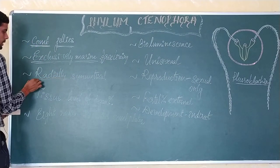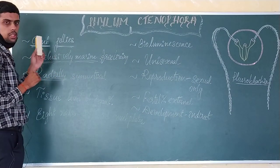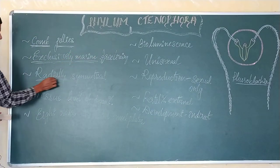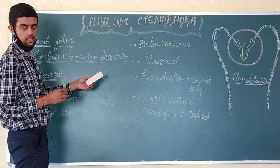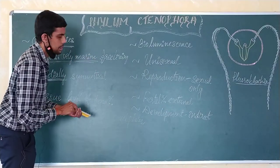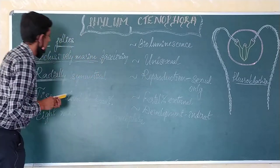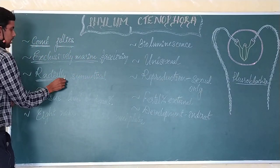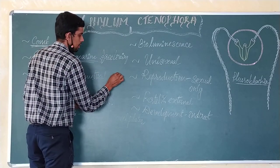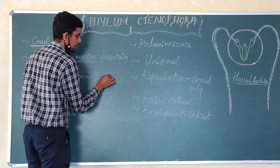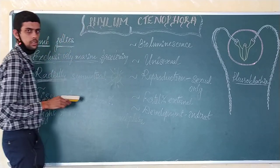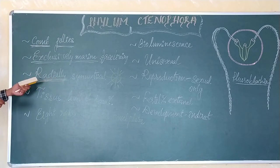Talking about the symmetry, as in the case of the phylum Coelentrata, even here you find a radially symmetrical body. That is, the body can be cut into two equal halves at any plane — that is radial symmetry.